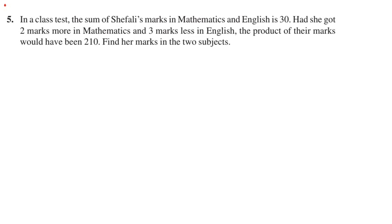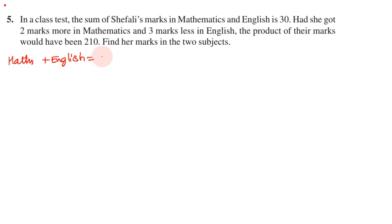Problem number 5 in a class test: the sum of Shefali's marks in mathematics and English is 30. Had she got 2 marks more in maths and 3 marks less in English, the product of their marks would have been 210. Find her marks in the 2 subjects. If Shefali's mathematics and English marks add up to 30, then math mark plus English mark equals 30.